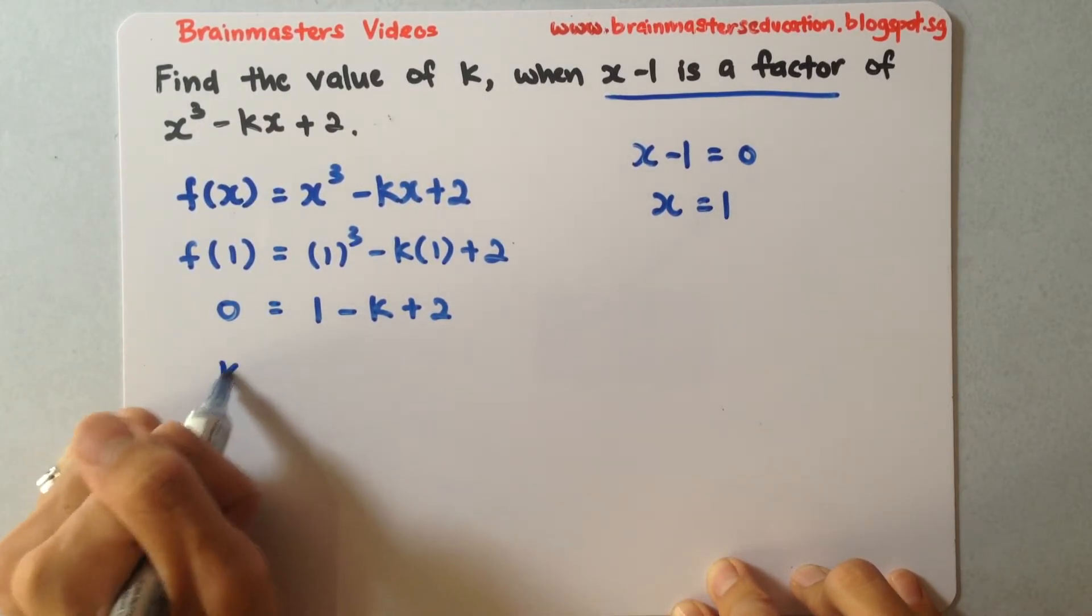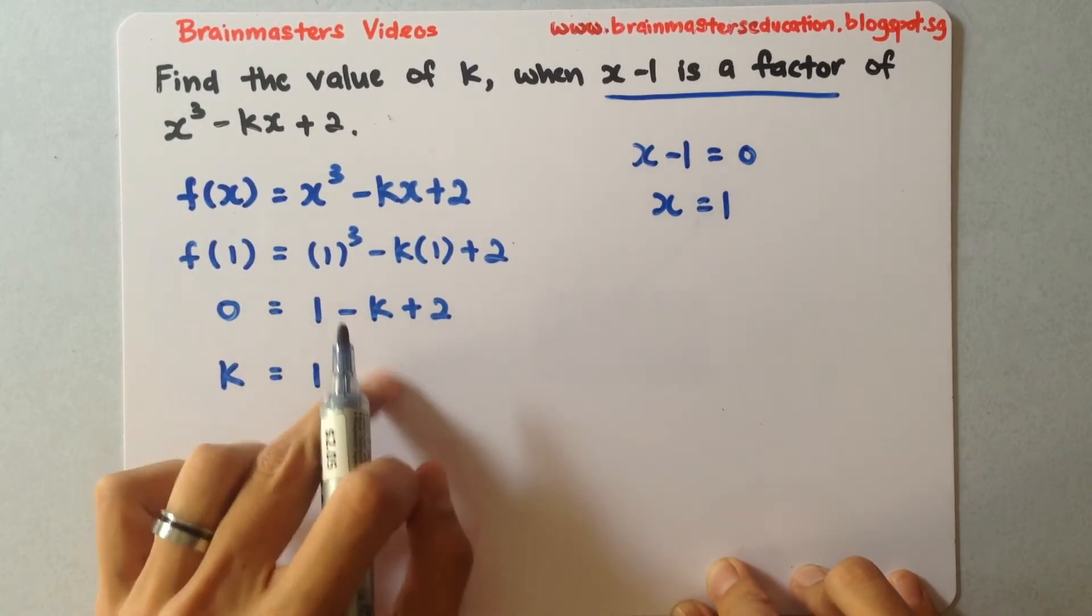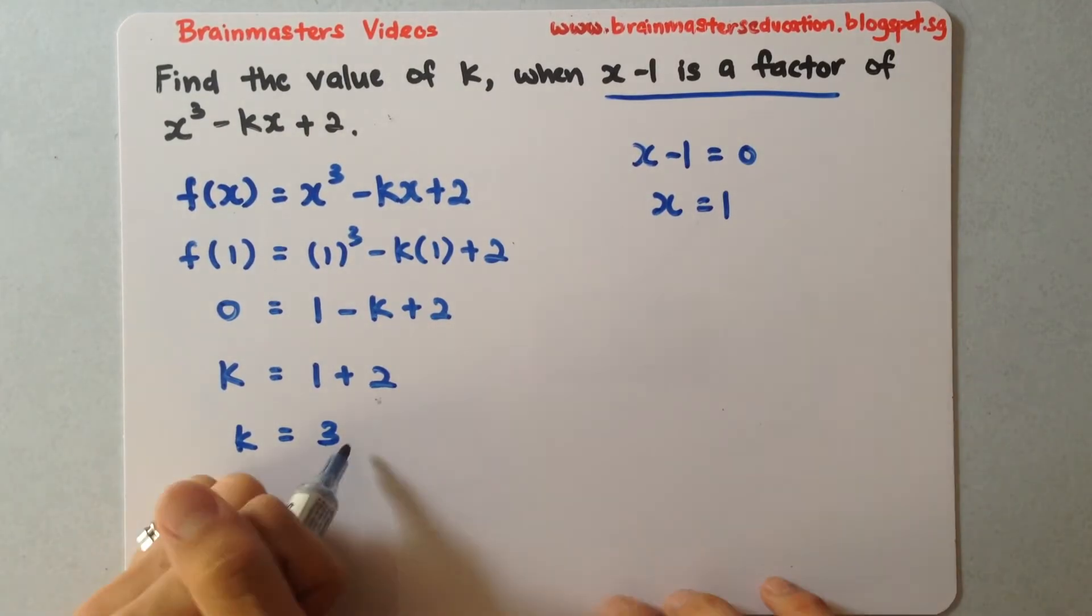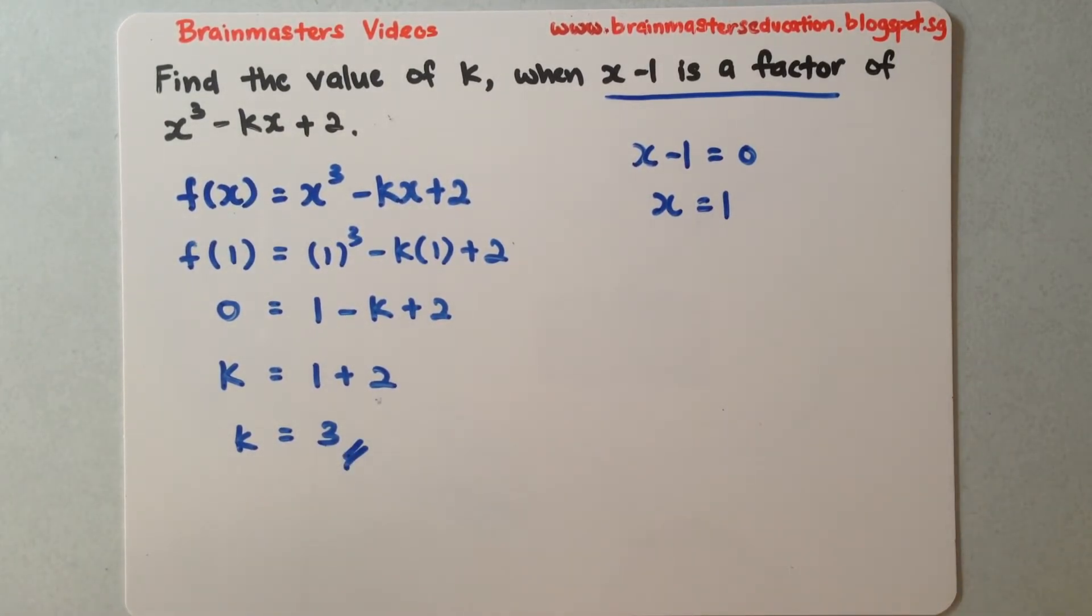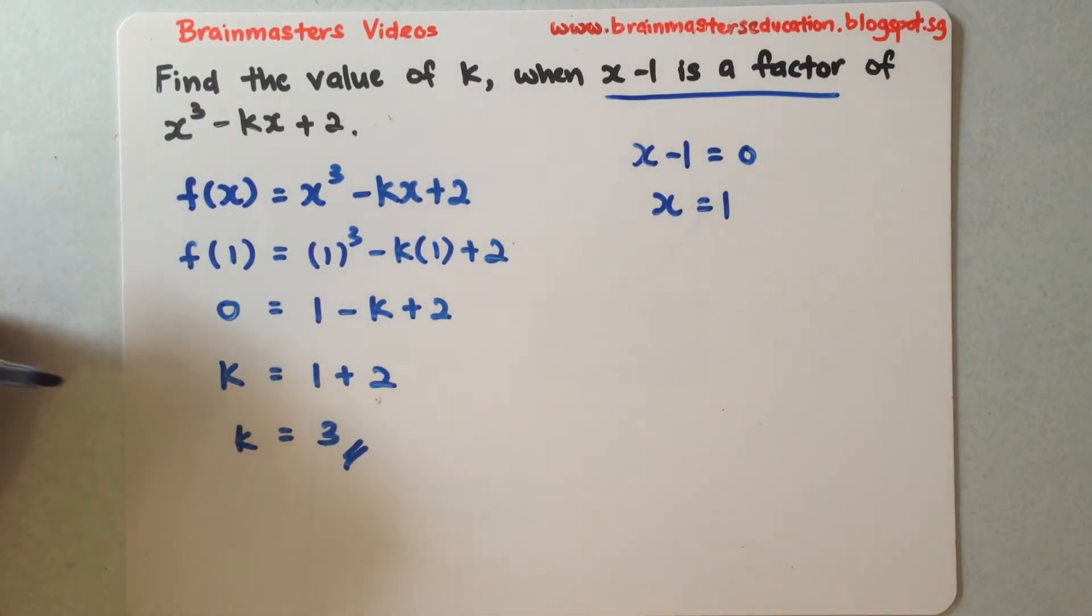So I'll transfer my k over. So I'll simplify out to give me my k is 3. It means that when I put the 3 back into the equation, I divide by x minus 1, my remainder will be 0.